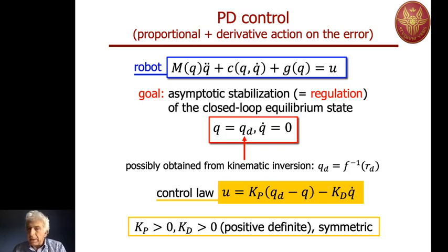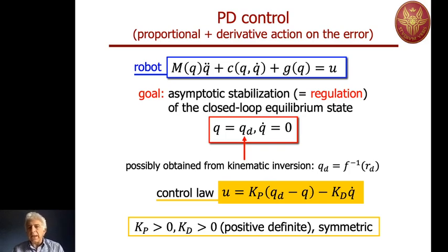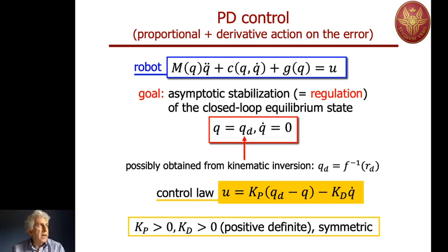There is a proportional term with respect to the joint position error and a proportional term with Kd with respect to the velocity error — the derivative of the position error — keeping in mind that qd is constant. If we take the derivative of the error qd minus q, we get qd_dot, which is zero, minus q_dot. So the second term can be rewritten as a derivative term with respect to the position error, namely the velocity error. The desired qd may come from kinematic inversion of a desired pose of the end effector, but that is a different story.